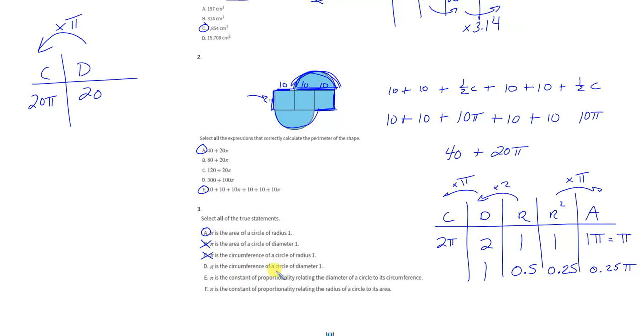Pi is the circumference of a circle that has a diameter of one. Well, here's a diameter of one. I multiply that by pi, I get one pi, which is pi. So that's true. Pi is the circumference when I have a diameter of one. That's a true statement.